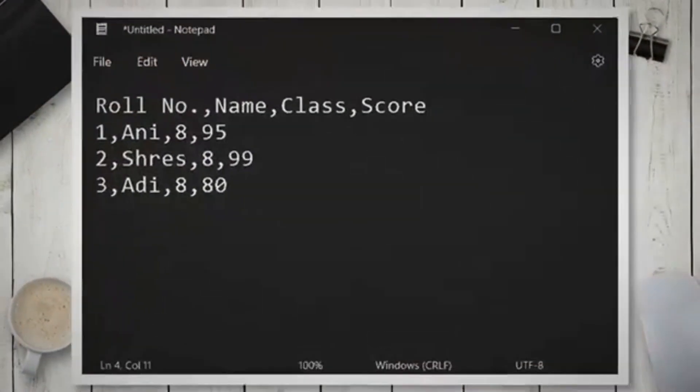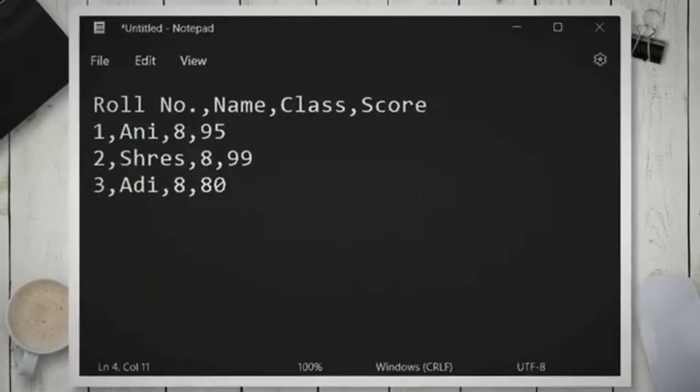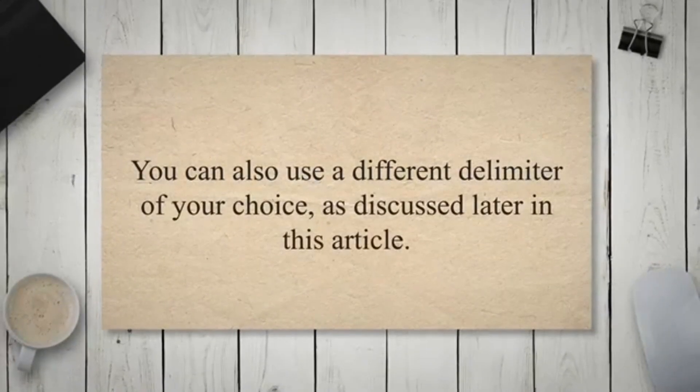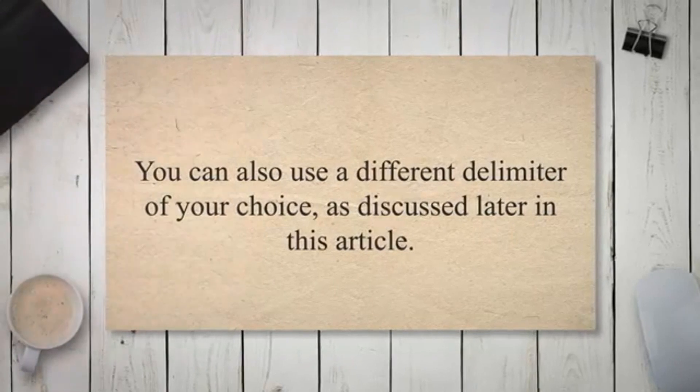The fields in the text file are separated by commas, which is the default delimiter. You can also use a different delimiter of your choice, as discussed later in this article.